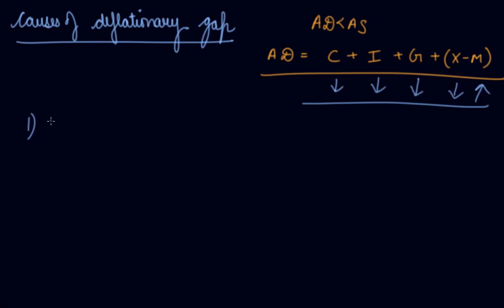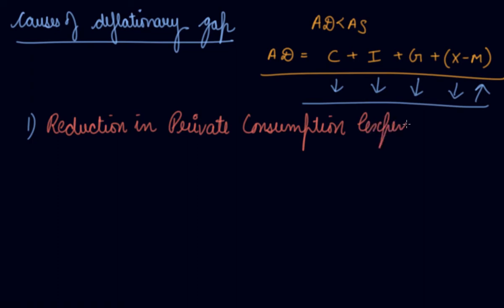Number one is your reduction in private consumption expenditure. So being as a household, if you reduce your expenditure, which means you are reducing your demand of the goods, which means you are reducing the aggregate demand in the economy.